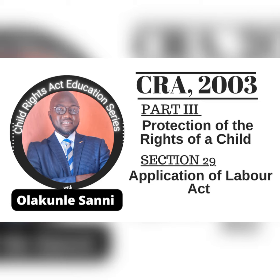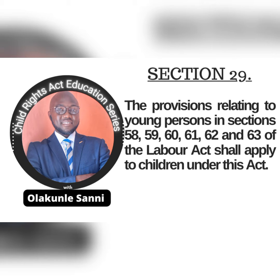Section 29 has to do with the application of the Labour Act. This section goes further to say that the provisions relating to young persons in sections 58, 59, 60, 61, 62, and 63 of the Labour Act shall apply to children under this Act. So this section is basically looking at how much you can apply the Labour Act to the Child Rights Act. Those sections from 58 to 62 speak to the same things you can find in Section 28.